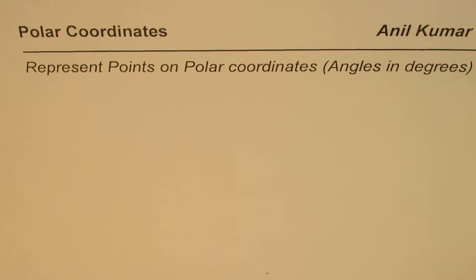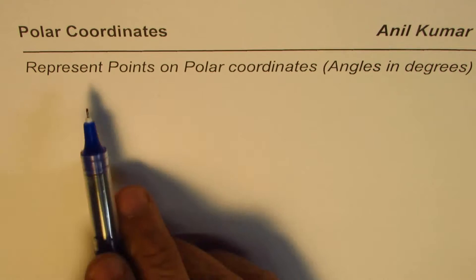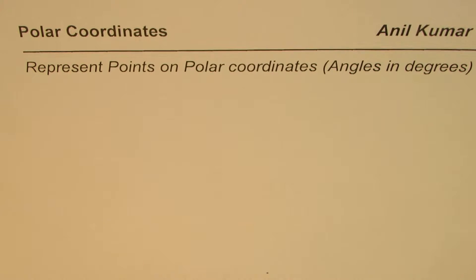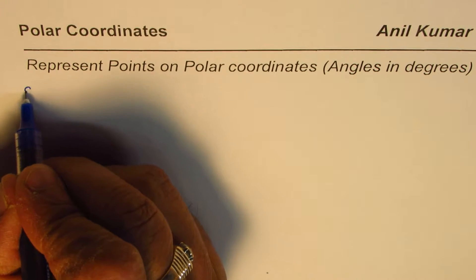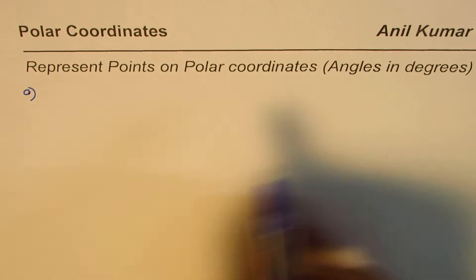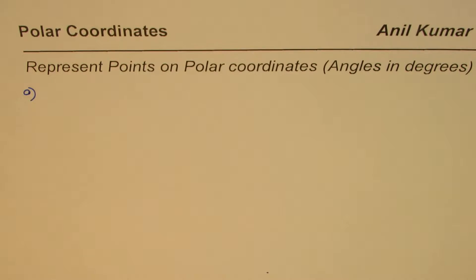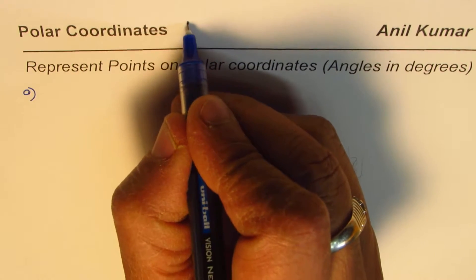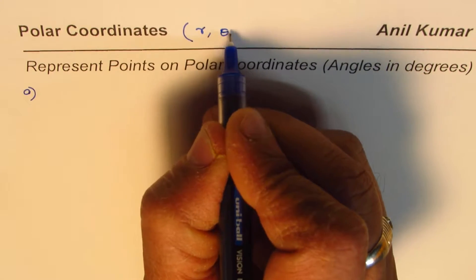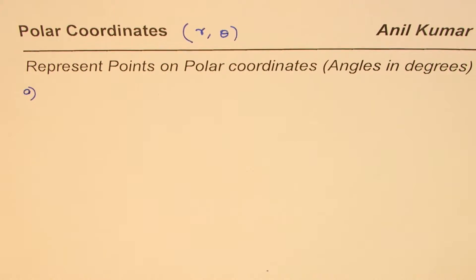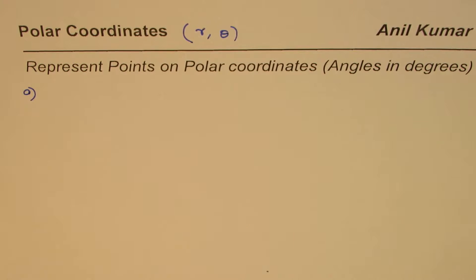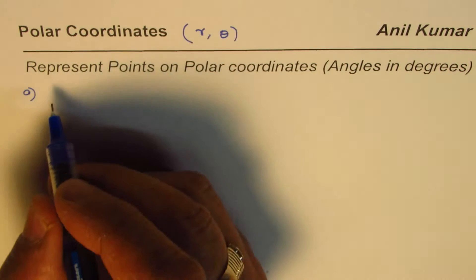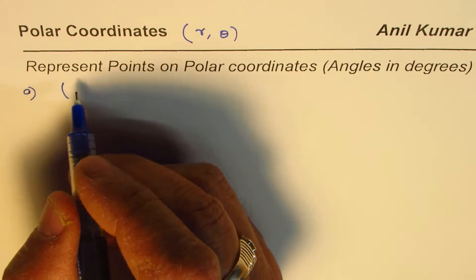I'm Anil Kumar and in this video we will see how to represent points on polar coordinates. We'll take some examples. We are taking angles in degrees in this particular video; in the next video we'll take angles in radians. Polar coordinates are normally represented in the form of r and theta, where r is the distance from the pole and theta is the angle which the terminating arm or segment makes with the polar axis.